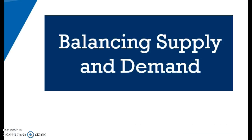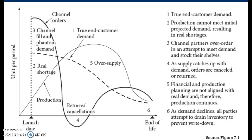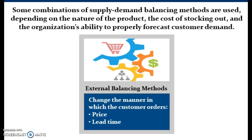Let's look at balancing supply and demand. There are four methods commonly used across many industries. Two of those — price and lead time — are referred to as external balancing methods. The other two — inventory and production flexibility — are called internal balancing methods. External balancing methods are used in an attempt to change the manner in which the consumer orders in an attempt to balance the supply-demand gap.